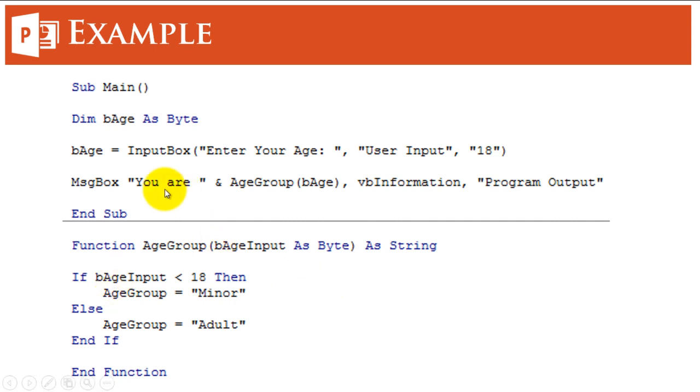we use this line message box, you are a minor or an adult. And here we are using the function age group. The input for this function as you can see here is bAge input as byte. Here we are using the variable that we have declared here as an input to this function.